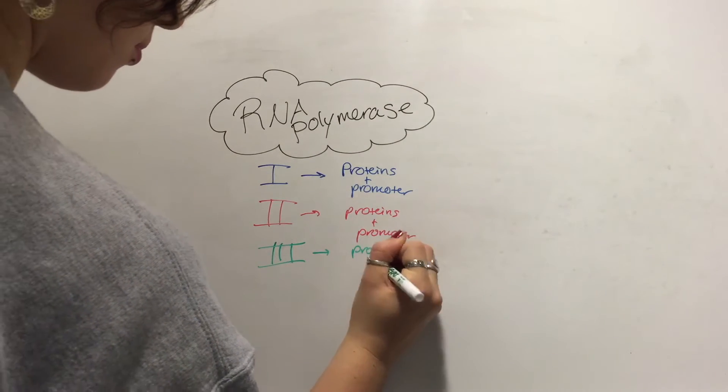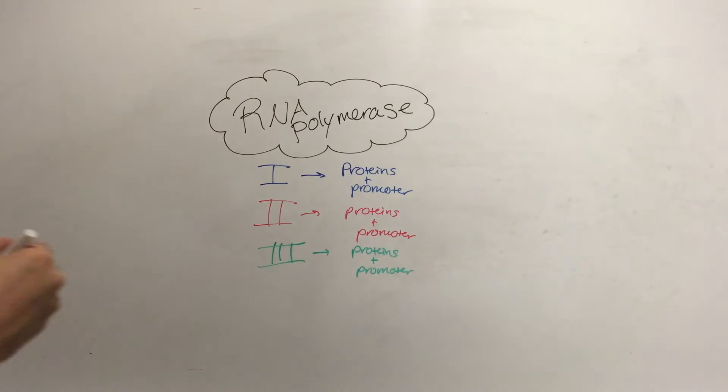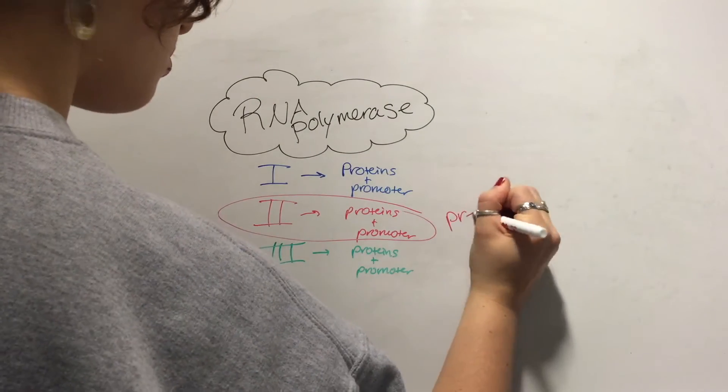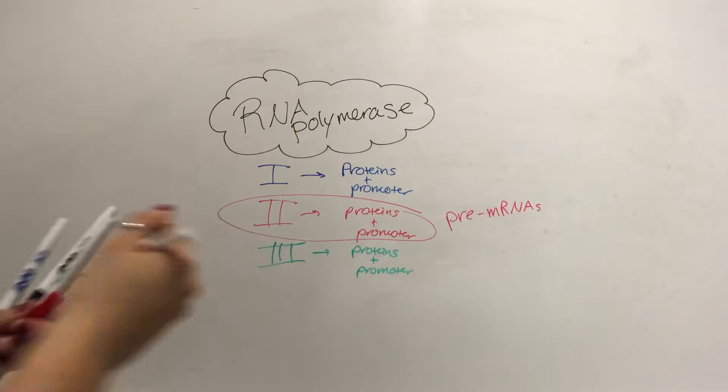We will focus on RNA polymerase II as it is the more complex of the three types. RNA polymerase II is involved in the transcription of protein-coding pre-mRNAs.